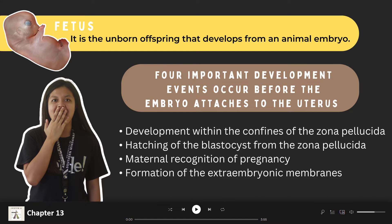After fertilization, four important developmental events occur before the embryo attaches to the uterus. First is the development within the confines of the zona pellucida. Second, hatching of the blastocyst from the zona pellucida. Third, maternal recognition of pregnancy. And fourth, formation of the extra-embryonic membranes.